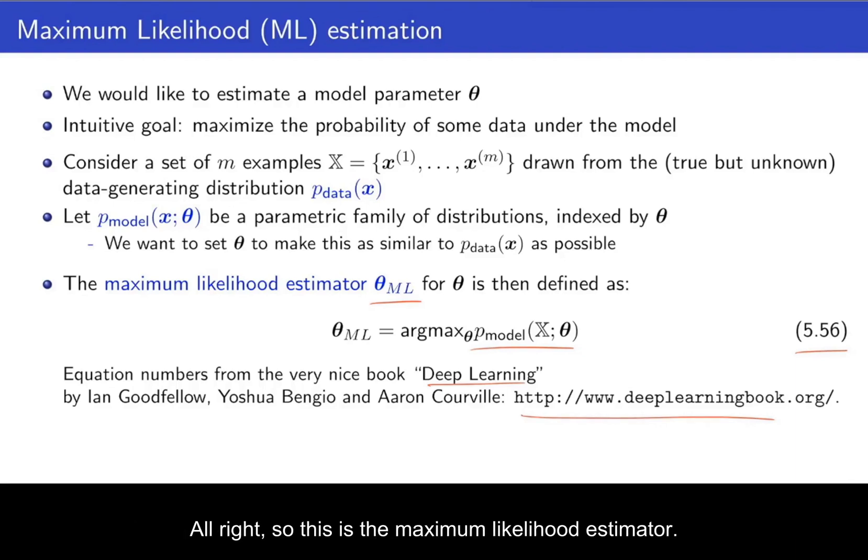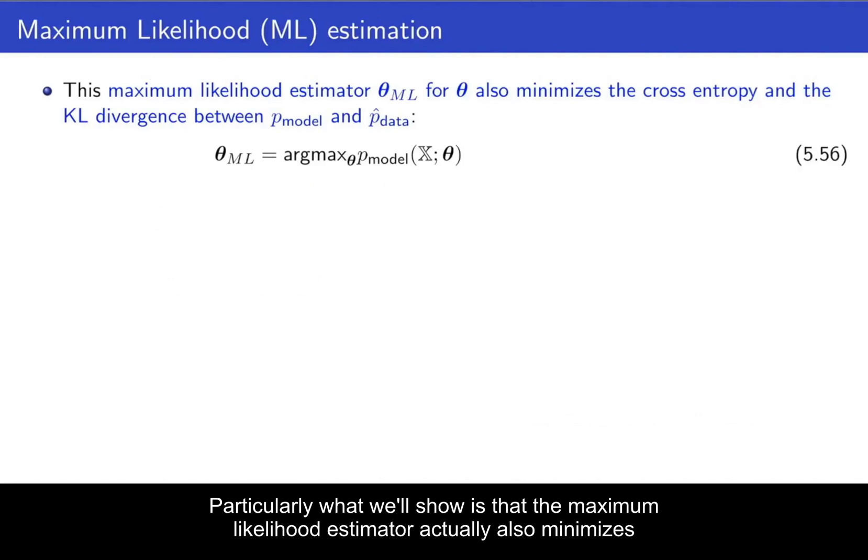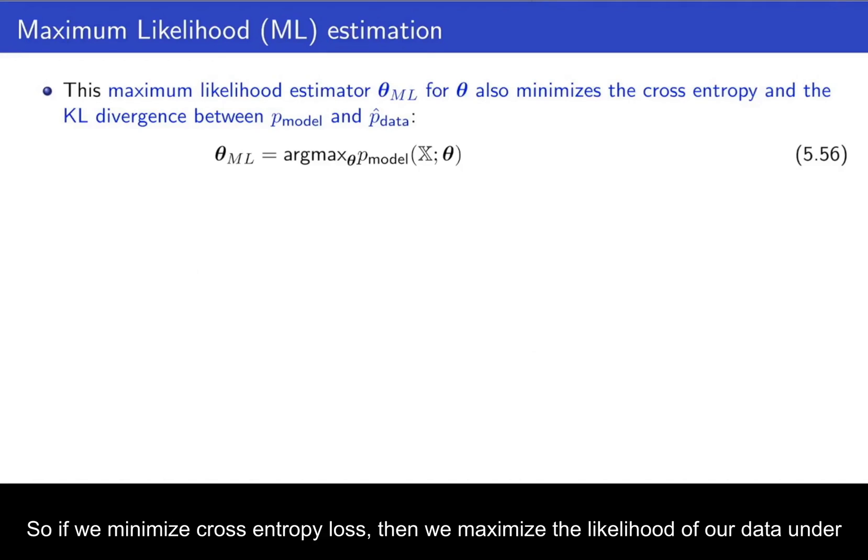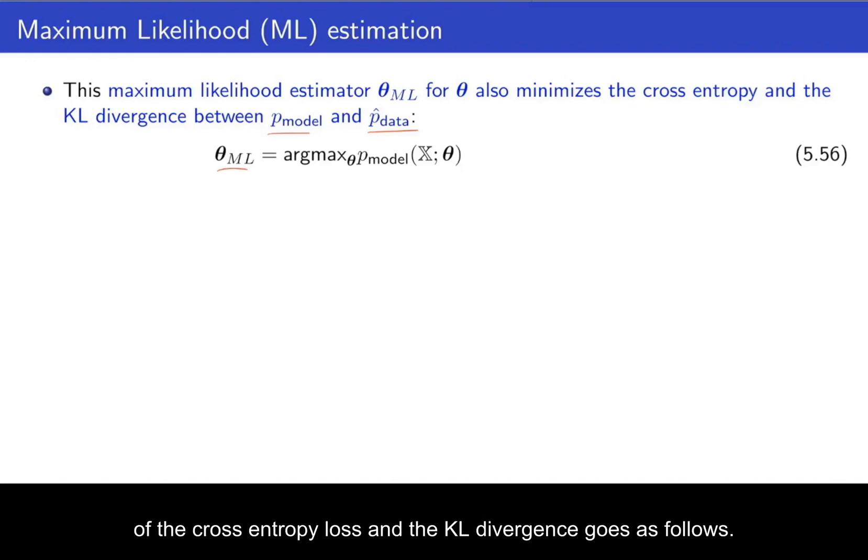Alright. So this is the maximum likelihood estimator. And now we'll relate this to the cross-entropy loss and to the KL divergence. Particularly, what we'll show is that the maximum likelihood estimator actually also minimizes the cross-entropy and the KL divergence. So if we minimize cross-entropy loss, then we maximize the likelihood of our data under our model. And that's precisely what we want. So we want to change the model by changing its parameters, here denoted as theta, in order to make this data as likely as possible.